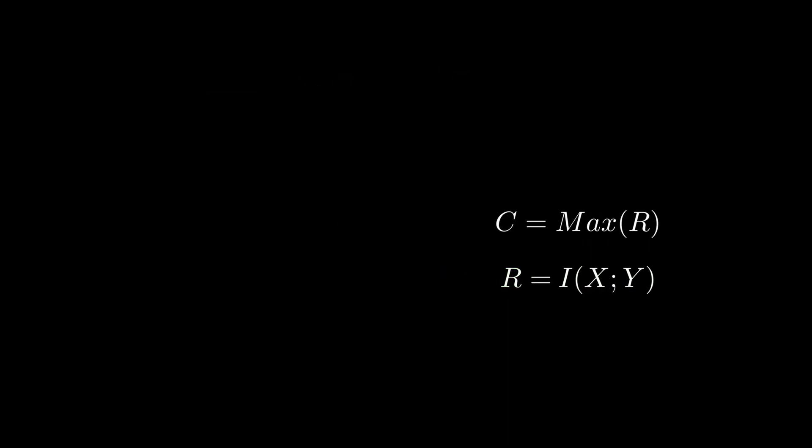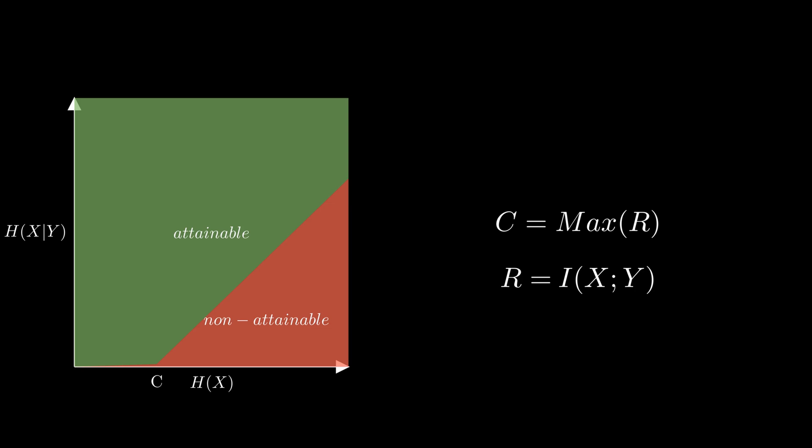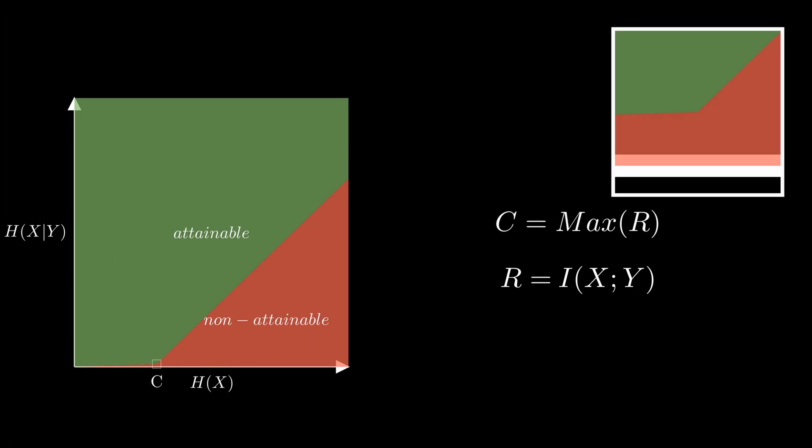Here is where the beauty of the noisy channel theorem comes at play. It shows what are the attainable uncertainties of the input given the output, when we send data through a source with a certain entropy. And it revolutionized the modern world by showing that if we transmit data with rates up to our channel's capacity, the error rate can be made arbitrarily small.